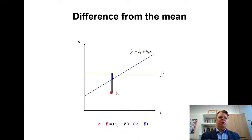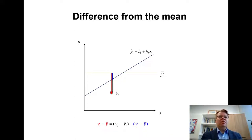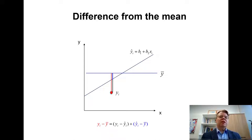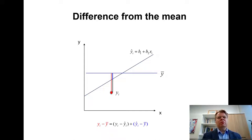Any point on this black regression line is obtained as B1 plus B2 times the corresponding X value. We can use this regression line to form a prediction. Y-hat-I is the common notation for the predicted value — it is B1 plus B2 times XI, the predicted value of YI from the regression line. I have also plotted a horizontal blue line labeled Y-bar, indicating the sample average of the dependent variable Y.